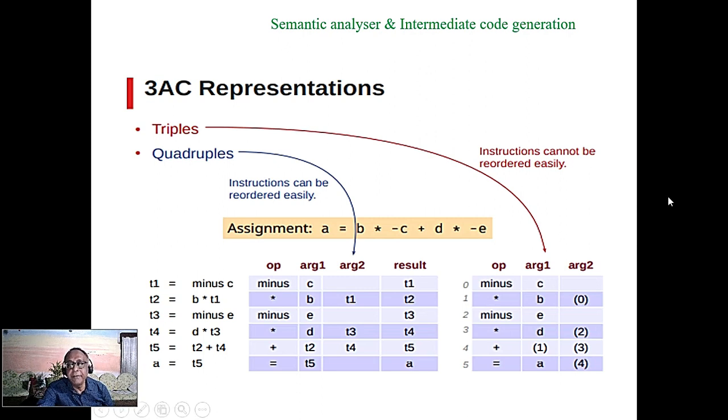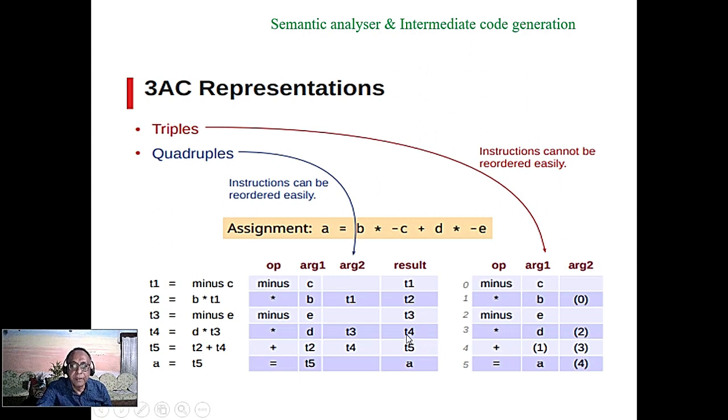Three address code can be implemented by triples or quadruples; quadruples are better but may take more space.